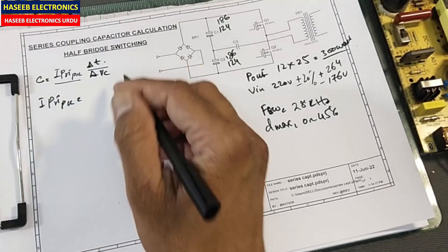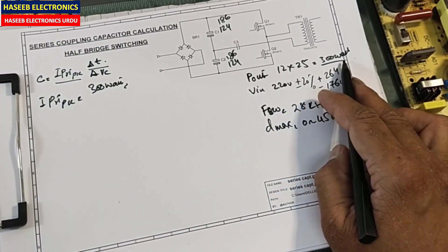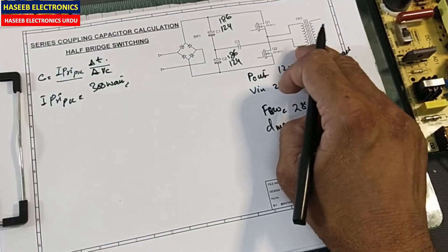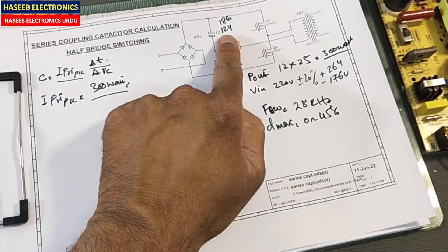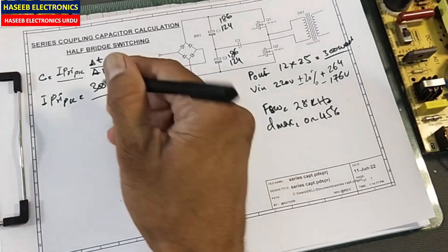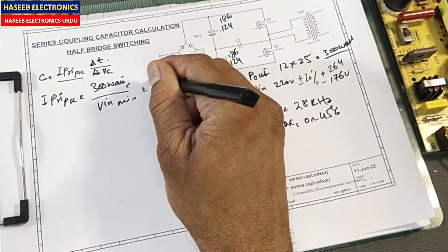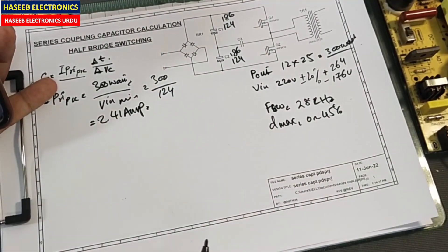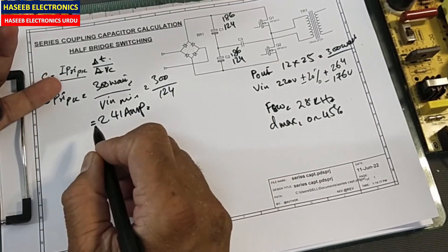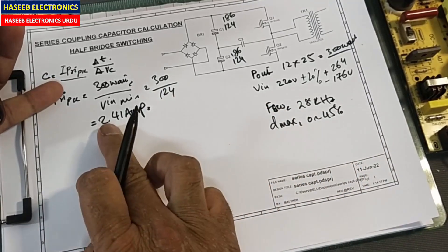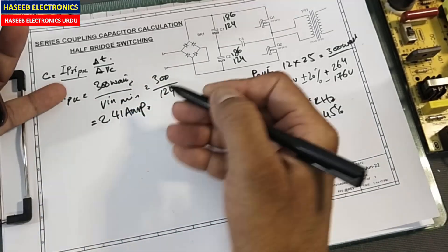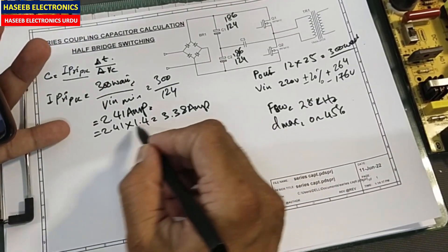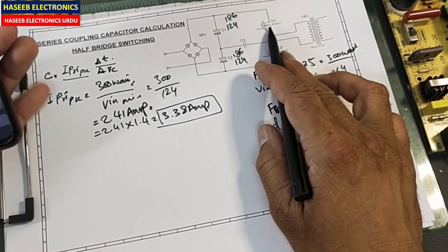First, I-primary-peak: we know the output is 300 watts. If we want exactly 300 watts out, we consider 300 watts input as well. So 300 watts divided by the minimum voltage of 124 volts gives 2.41 amperes — this is the theoretical value. For practical design, multiply by a factor of 1.3 to 1.5. Using 1.4: 2.41 × 1.4 = 3.38 amperes. This is the maximum peak primary current for one switching MOSFET at 28 kHz.